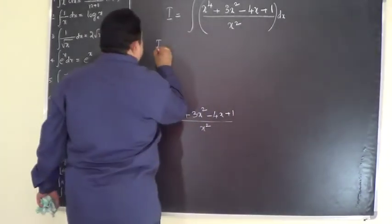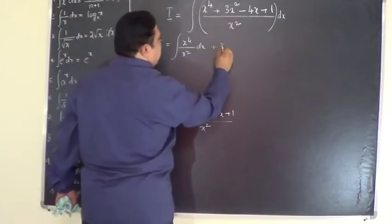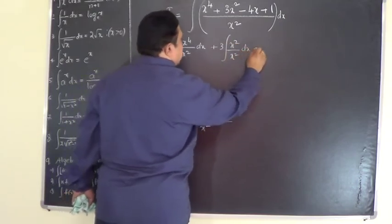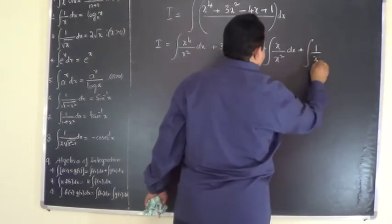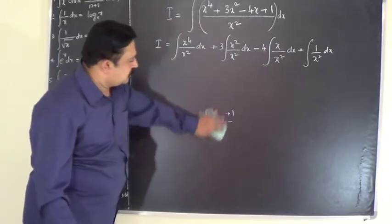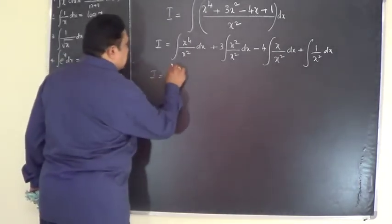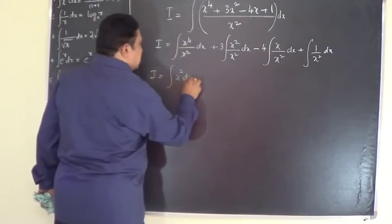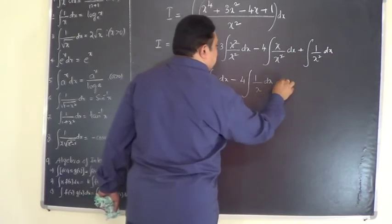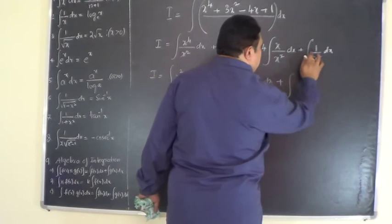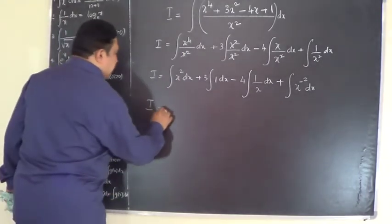Now separate each term: integral x to the power of 4 by x squared dx — 3 is a constant, take it outside — plus 3 times integral x squared by x squared dx, minus 4 times integral x by x squared dx, plus integral 1 by x squared dx. Simplify: this gives integral x squared dx plus 3 times integral 1 dx minus 4 times integral 1 by x dx plus integral x to the power of minus 2 dx, shifting x squared from denominator to numerator. Now integrate using the relevant formula.